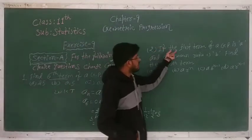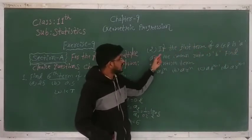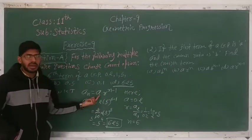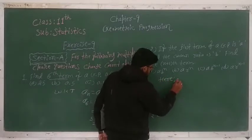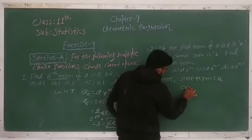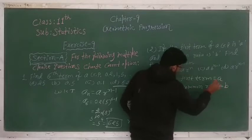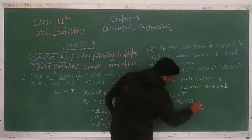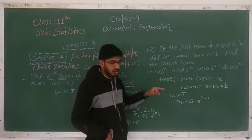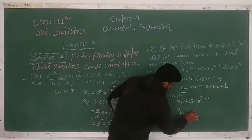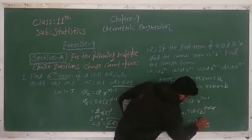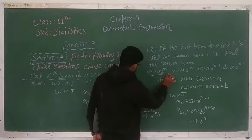Question 2: If the first term of a GP is a and the common ratio is b, find the (n+1)th term. Using the formula aₙ = a · rⁿ⁻¹ with n = n+1: a_{n+1} = a · b^{(n+1−1)} = a · bⁿ. The +1 and −1 cancel, so the answer is a · bⁿ.